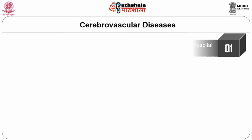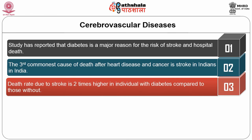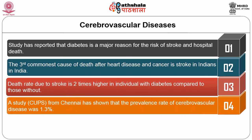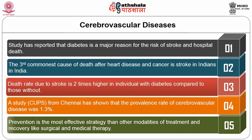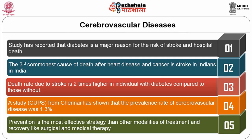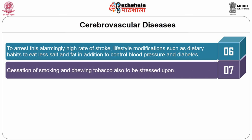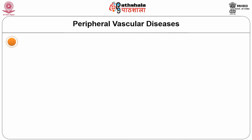The second major macrovascular complication is cerebrovascular disease and stroke. Diabetes is a major cause and is the third commonest cause of death from stroke in India. The death rate due to stroke is two times higher in individuals with diabetes compared to those without. The Chennai Urban Population Study showed a cerebrovascular disease prevalence rate of 1.3%. Prevention through lifestyle modification — eating less salt and fat, controlling blood pressure and diabetes, and cessation of smoking and tobacco — is the most effective strategy.